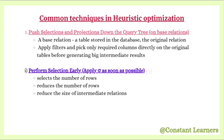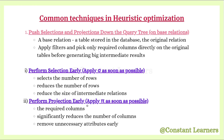By performing projection early — applying pi as soon as possible — the projection operation gives us only the required columns. This significantly reduces the number of columns to process, thereby reducing the table's size. We can remove unnecessary attributes early to reduce the size of intermediate results.